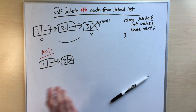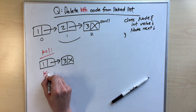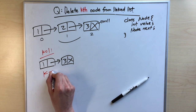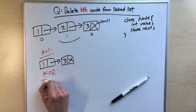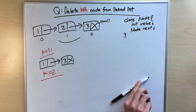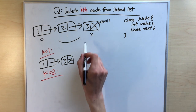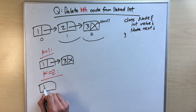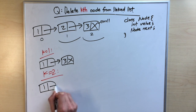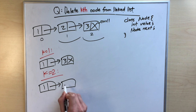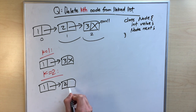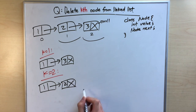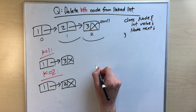If k equals two, we get rid of the last node, keeping just the first two nodes. The node containing one points to the node containing two, and that node now points to null since it's the new last node.